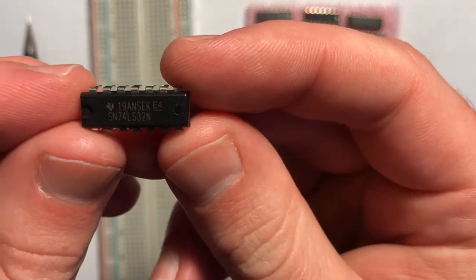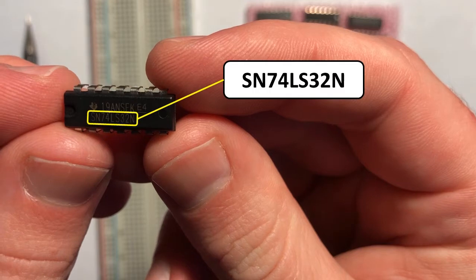If we look closely at our IC, we see that it has a number, and this number can be used to identify the purpose of our IC. If we research this number online, we can find a data sheet telling us that this particular IC contains four OR gates.